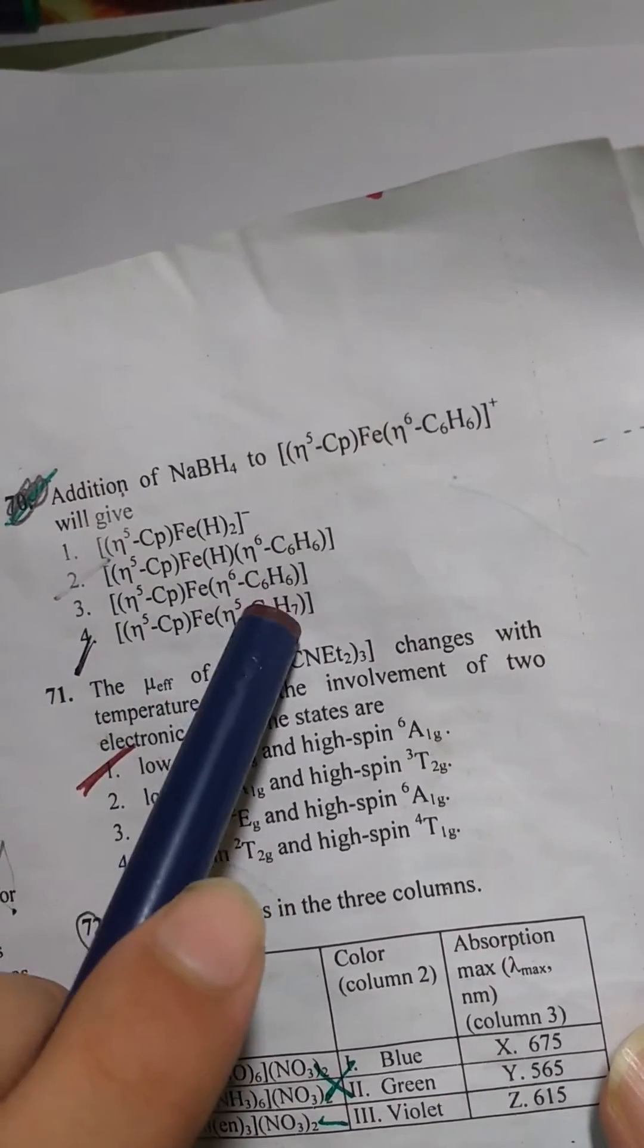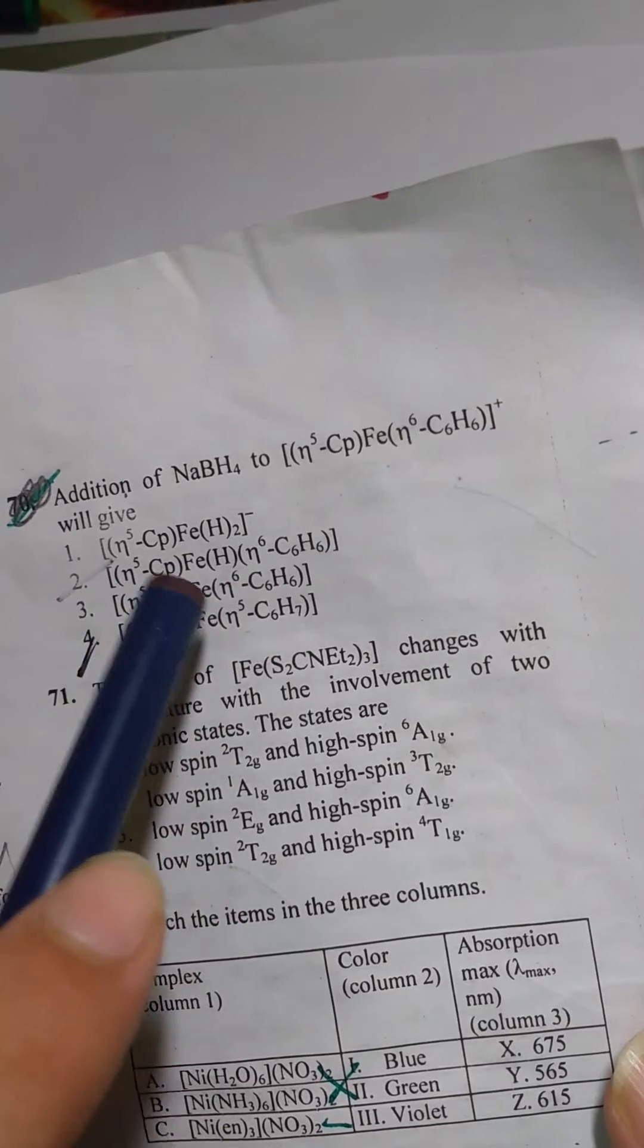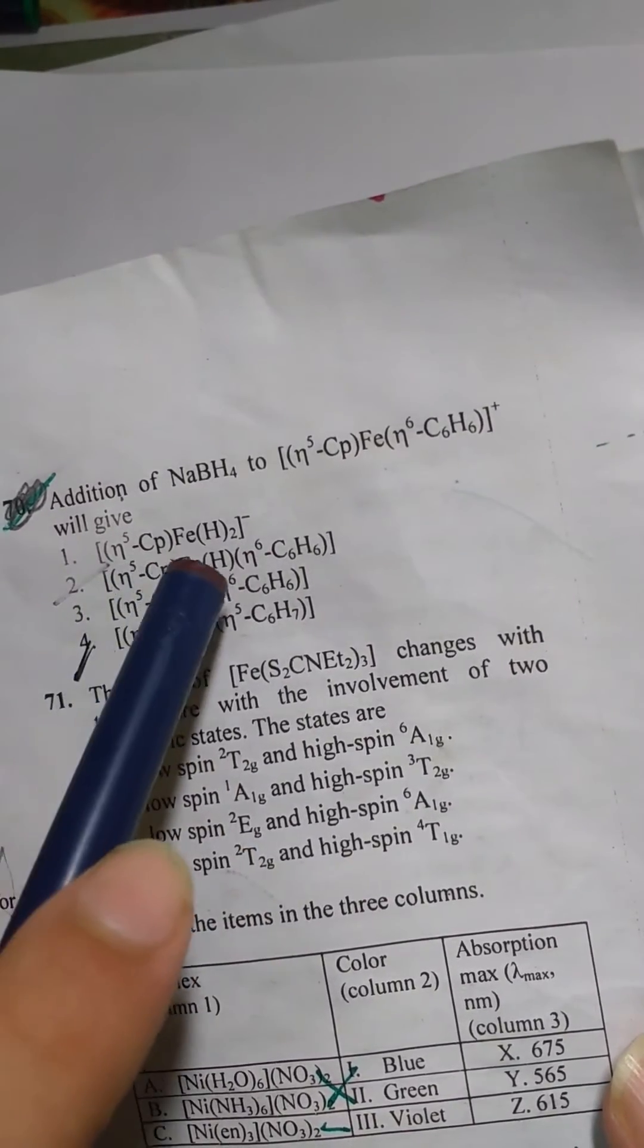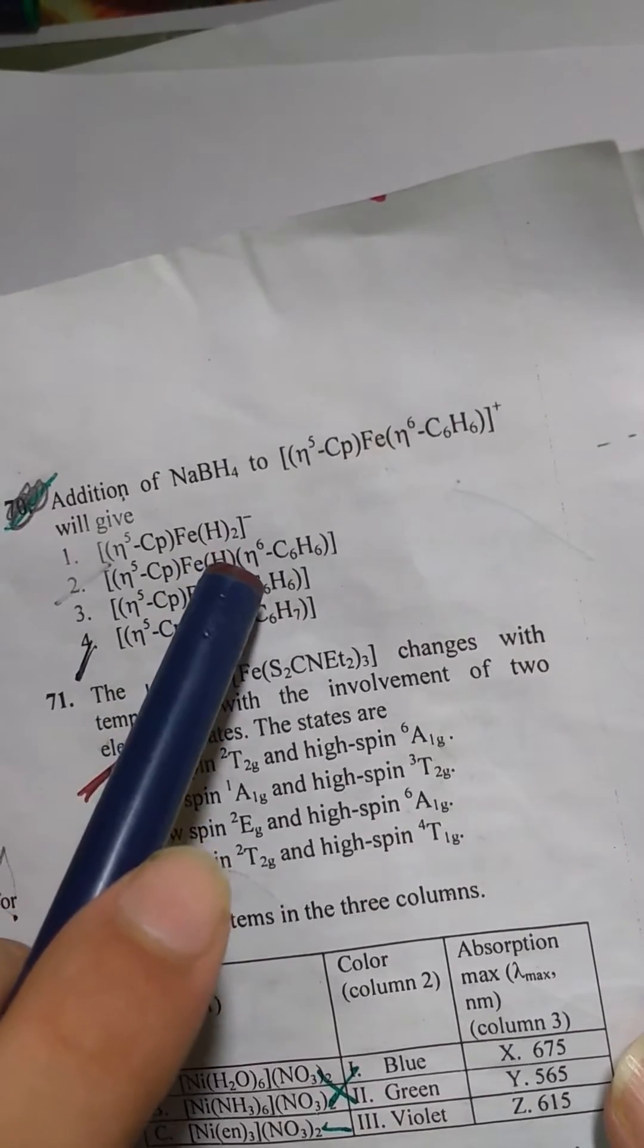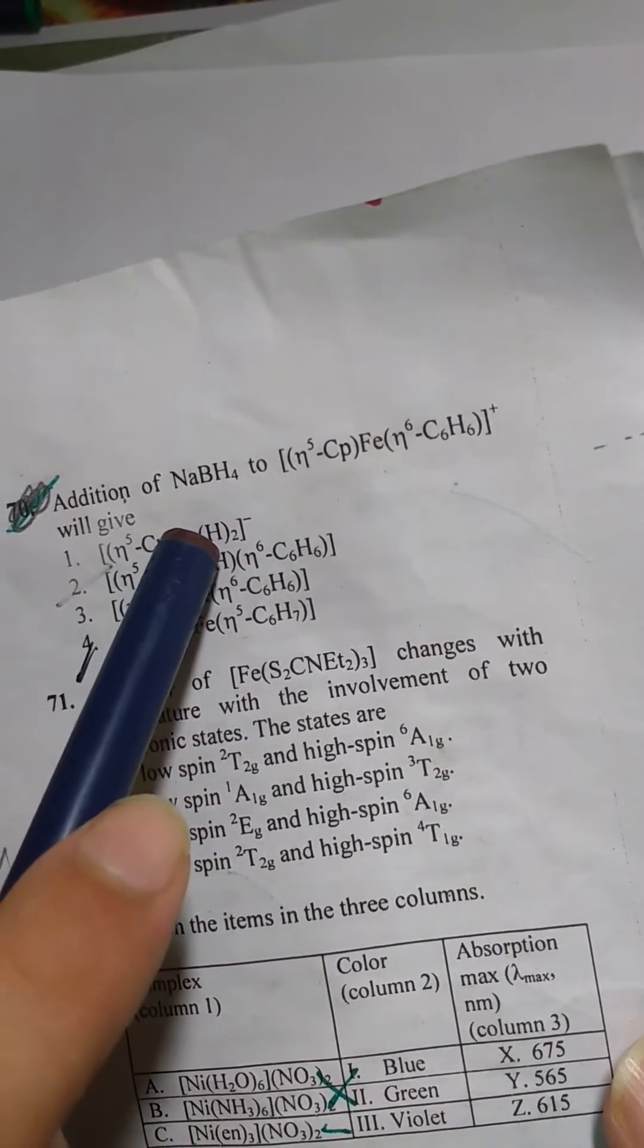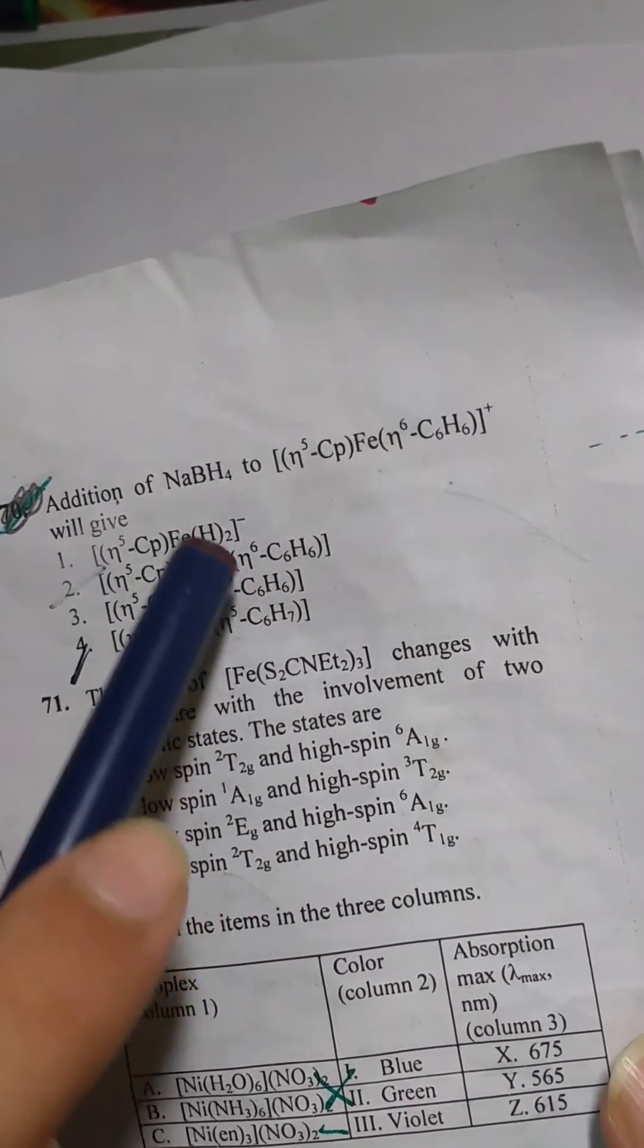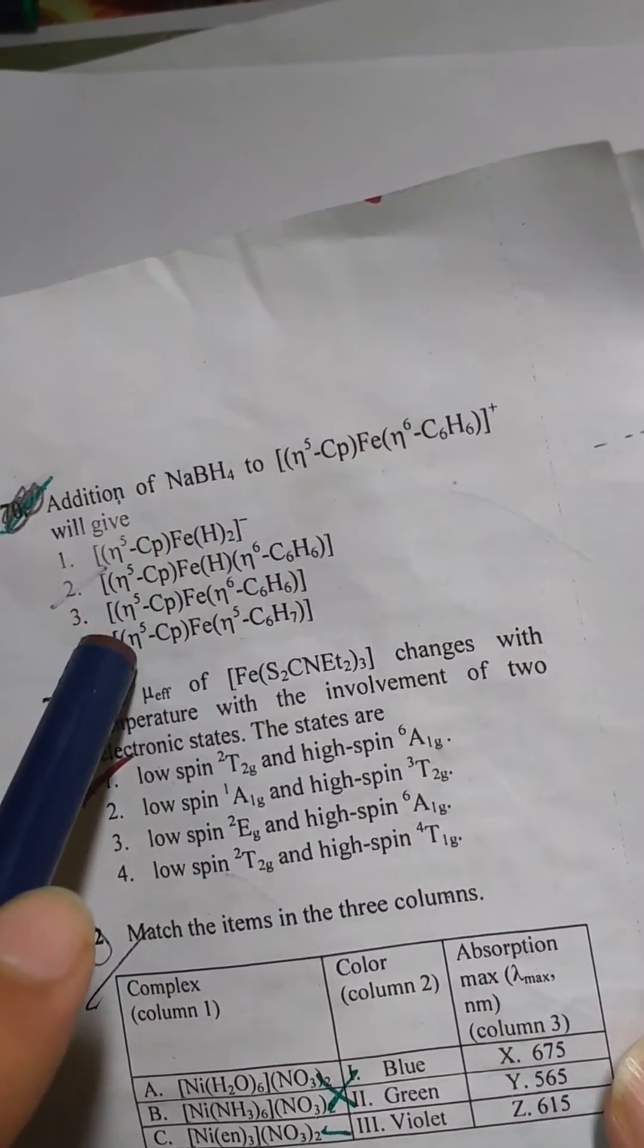If we calculate for the rest, the third option is 6 plus 5, 11 plus 8, 19 electrons. This is 6 plus 5, 11 plus 8, 19 plus 1, 20 electrons. This is 5 plus 8, 13 plus 2, 15 and plus 1, 16 electron complex. So if you see out of all of these options we have only the fourth option as the 18 electron complex.